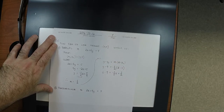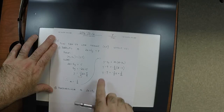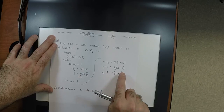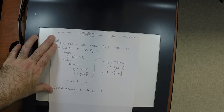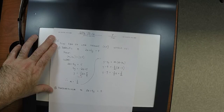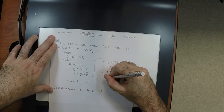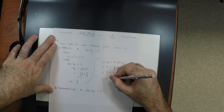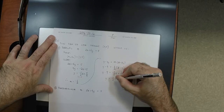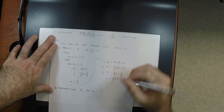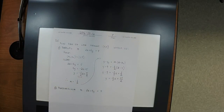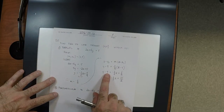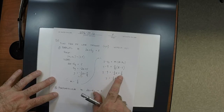Add 9 to both sides. Nine is 18 halves, and 3 more is 21 halves. So the answer to part 1 is y equals negative one-half x plus 21 over 2.